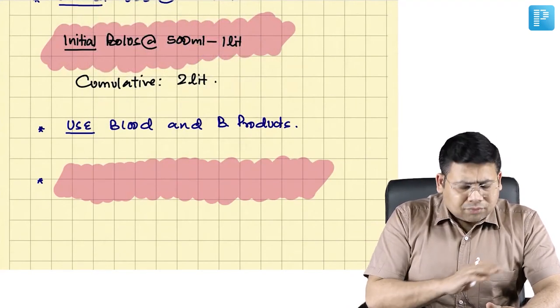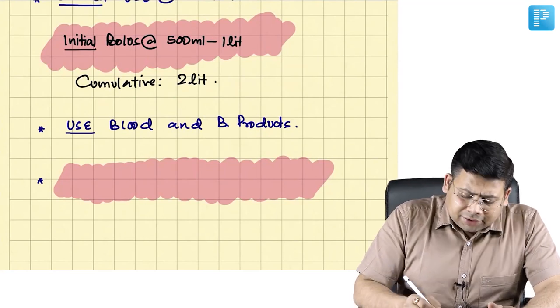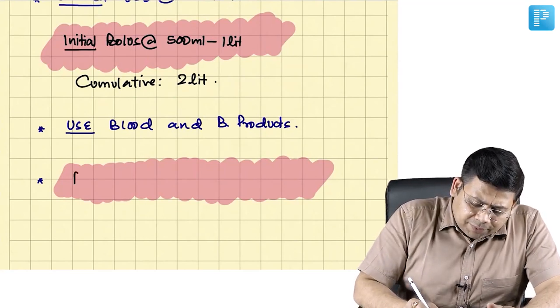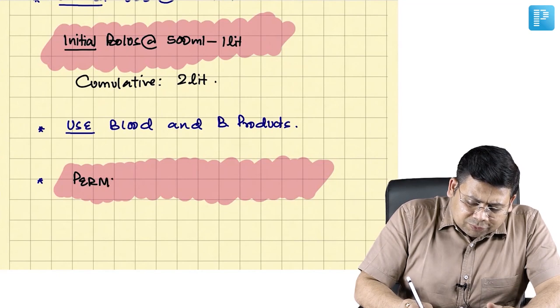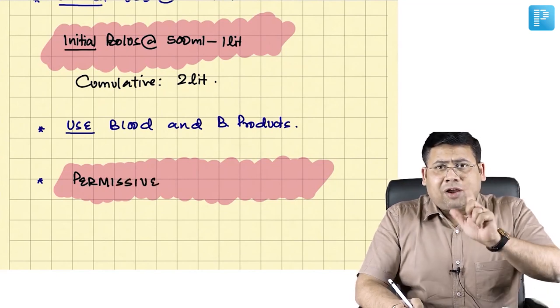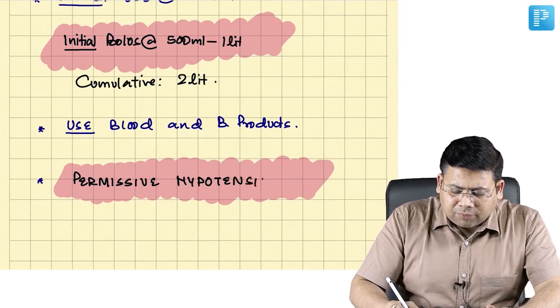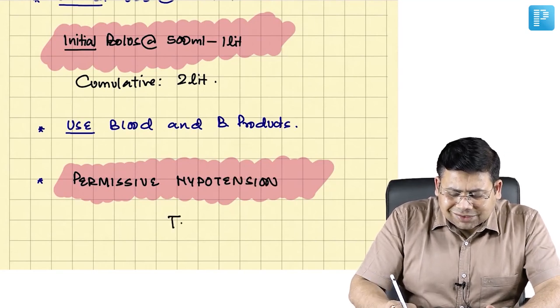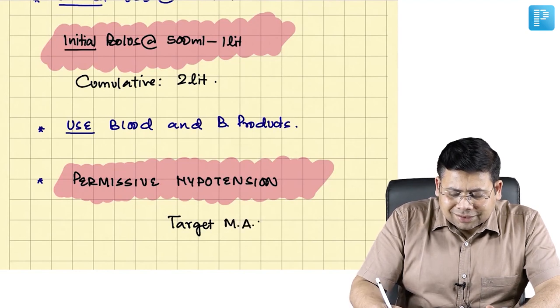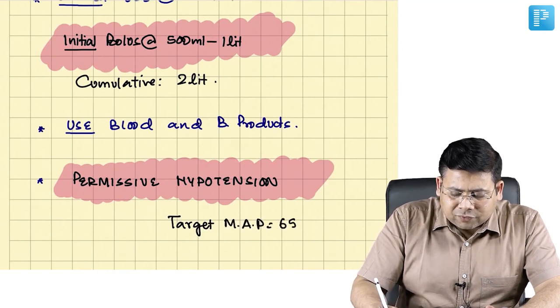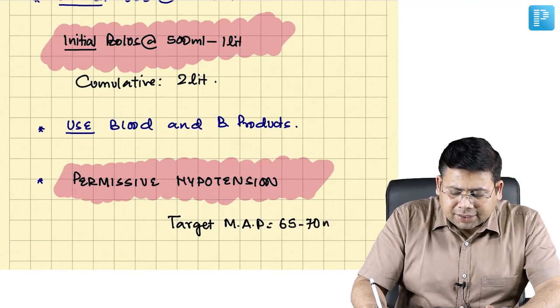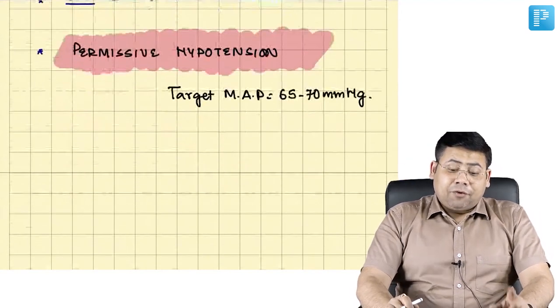Maintain a minimum threshold, that's more than enough, and this is what is known as permissive hypotension. You are allowing this hypotension. When we talk about permissive hypotension, what is the target MAP? The target mean arterial pressure is roughly around 65 to 70 mmHg.